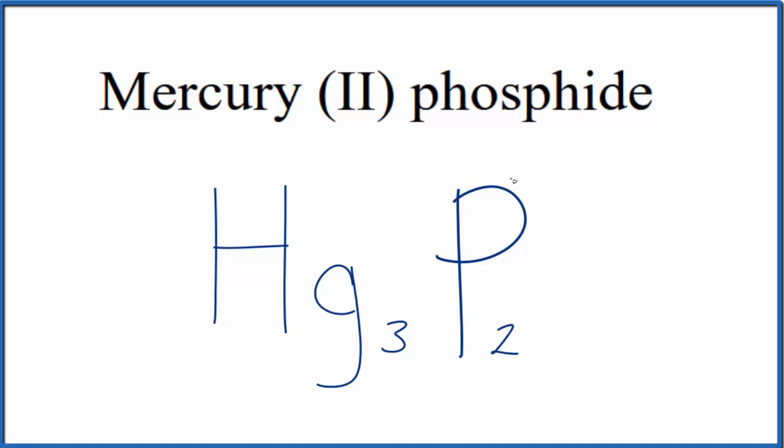Let's check our work. We said phosphorus, the phosphide ion, is 3-, and mercury is 2+. 3 times 2+ is 6+, 2 times 3- is 6-. These two numbers add up to zero. So this is the formula for mercury (II) phosphide. This is Dr. B. Thanks for watching.